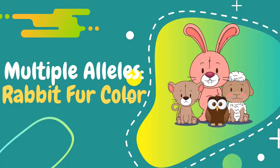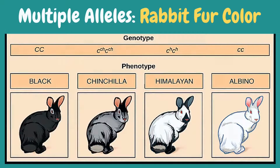In the rabbit fur color, there are four different alleles, which is why it is considered an example of multiple alleles. To further understand the four different alleles, let's look at the picture. There are four different types of rabbit fur color: black, chinchilla, himalayan, and albino. We can clearly identify the difference of each rabbit based on their fur colors.